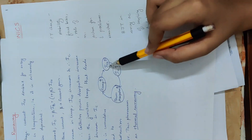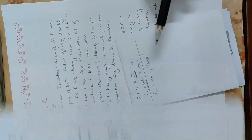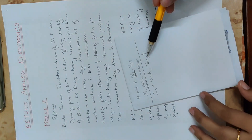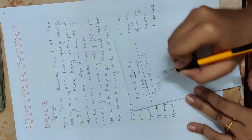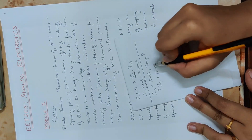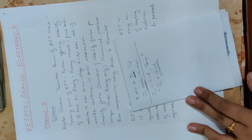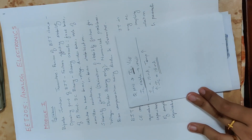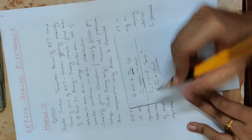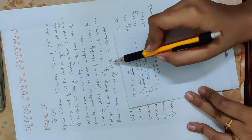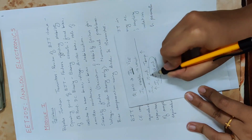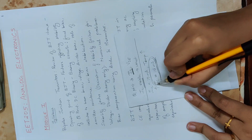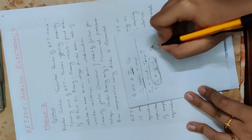Suppose temperature increases. IC value was 10 mA, but due to the temperature increase, IC increases to 15 mA. This is the problem that bias compensation addresses. There is a 5 mA increase in IC.